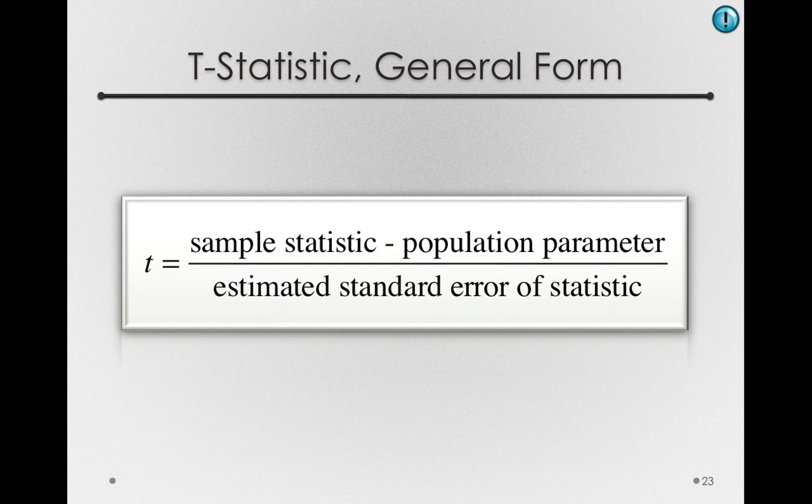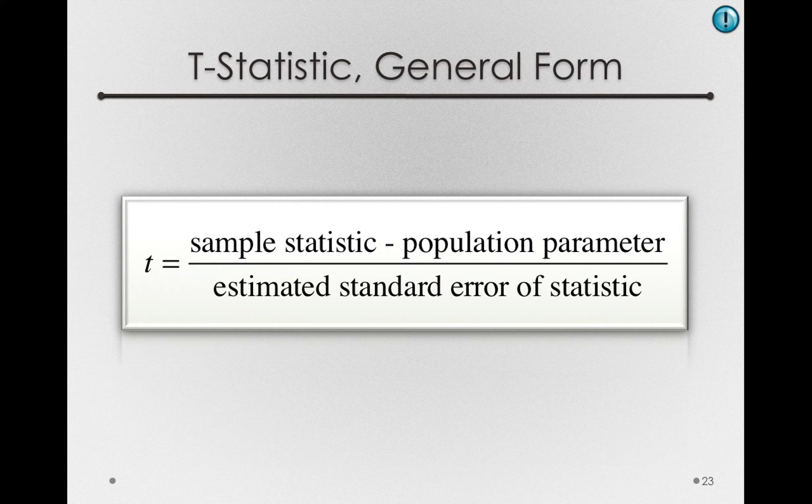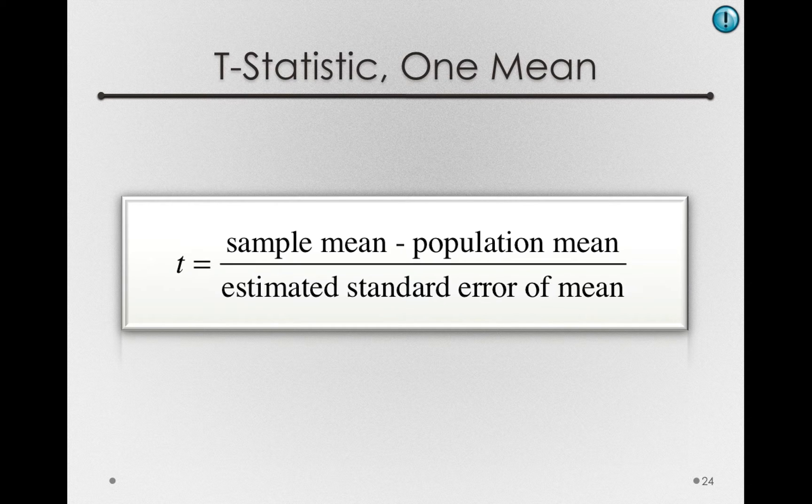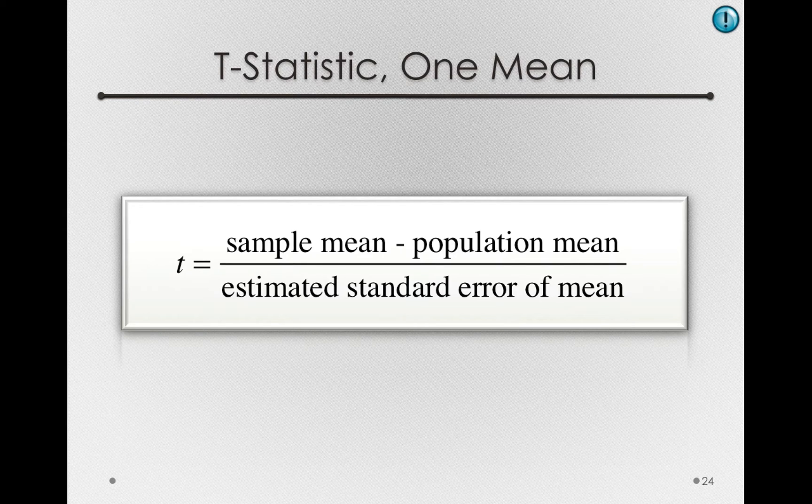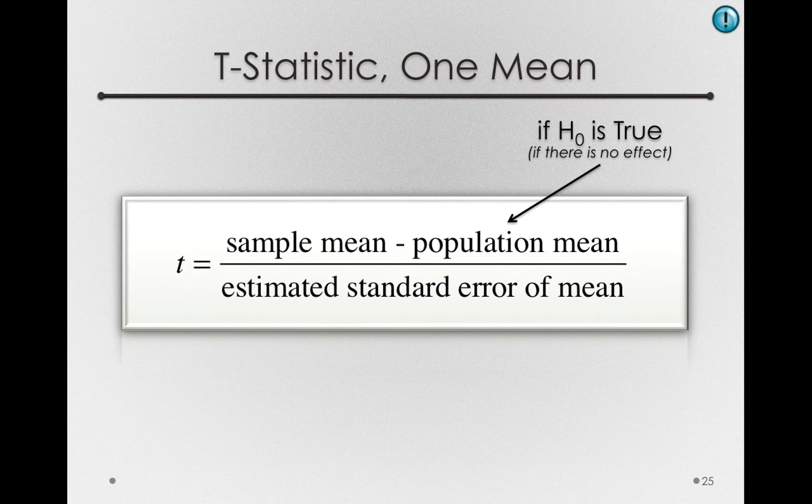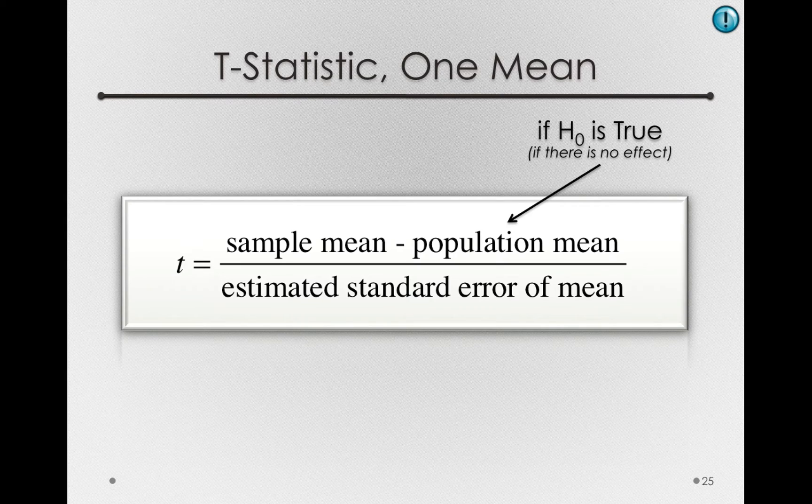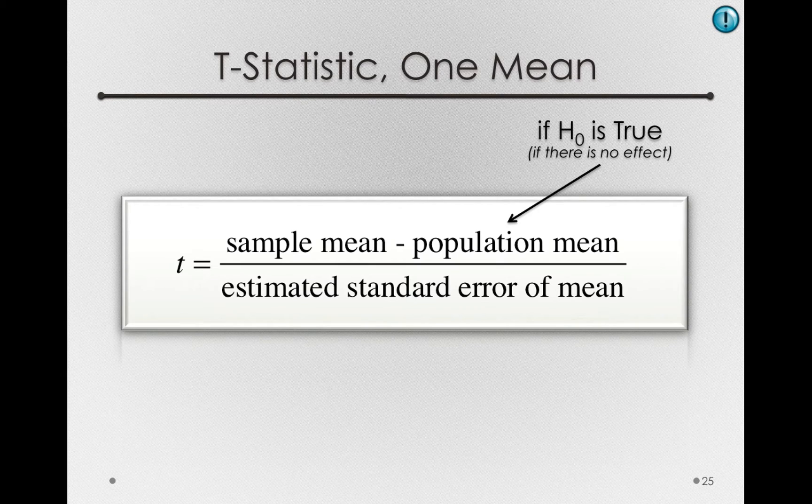Starting with our general form, let's substitute in what we'll be using. So with the one mean, we simply have a sample mean minus the population mean divided by the estimated standard error of the mean. Now notice the population mean in this case is referring to if H0 is true, that is, if there is no effect. Just like when we had our z-test, we'll still need to know a population mean if the null hypothesis is true.